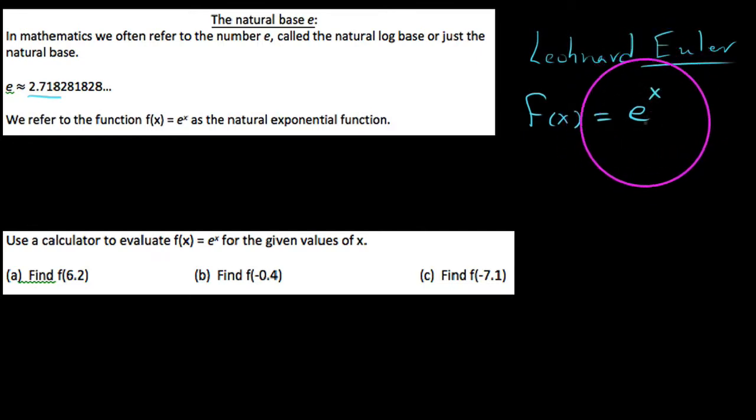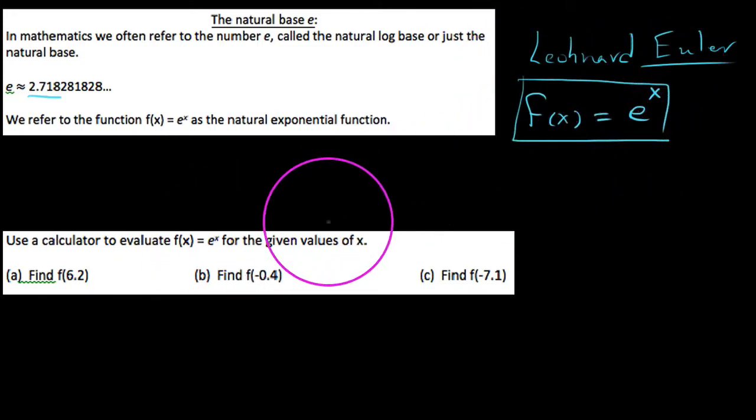So instead of like 3 to the X or 4 to the X, we have 2.718281828 to the X. And so we use this so often that I just want to make sure that we're familiar with what the number E is in the first place, and how to evaluate this function if I'm given a calculator.